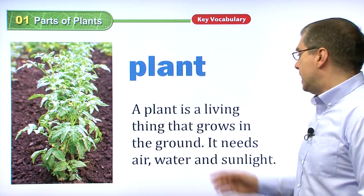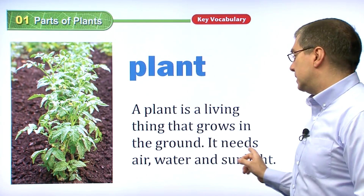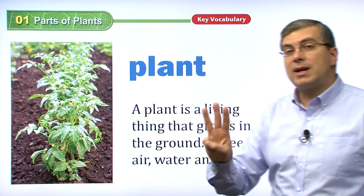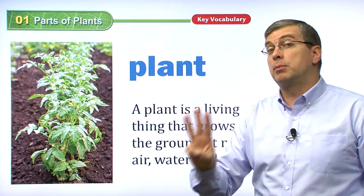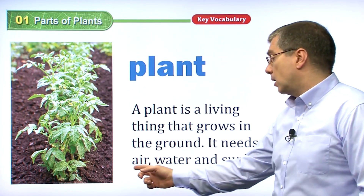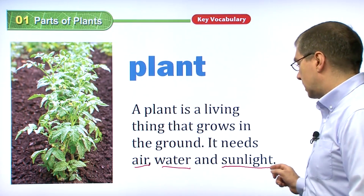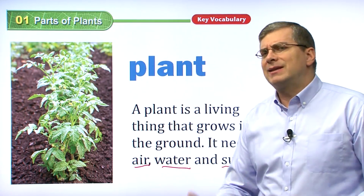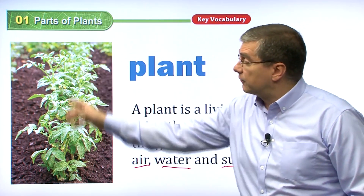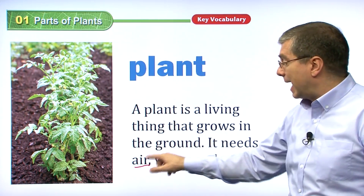A plant needs air, water, and sunlight — three things that a plant needs to grow. In this lesson we'll talk about the different parts of the plant that help the plant get air, water, and sunlight.